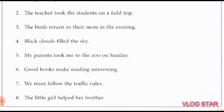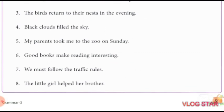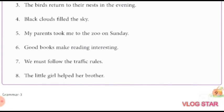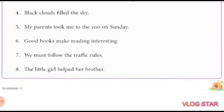Good books make reading interesting. Good books is the subject. Make reading interesting is the predicate. Number seven, we must follow the traffic rules. Here we is the subject. Must follow the traffic rules is the predicate. The little girl helped her brother. The little girl is the subject. Helped her brother is the predicate. So I hope you have understood this explanation of this assignment. Thank you.